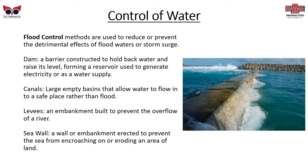The control of water can be a tricky thing. Flood control methods are used to reduce or prevent the detrimental effects of floodwaters or storm surge. A dam is a barrier constructed to hold back water and raise its level, forming a reservoir used to generate electricity or as a water supply. Canals are large, empty basins that allow water to flow to a safe place rather than flood. Levees are embankments built to prevent the overflow of a river, and a seawall — like pictured here — is an embankment or wall to prevent the sea from encroaching on or eroding an area of land.